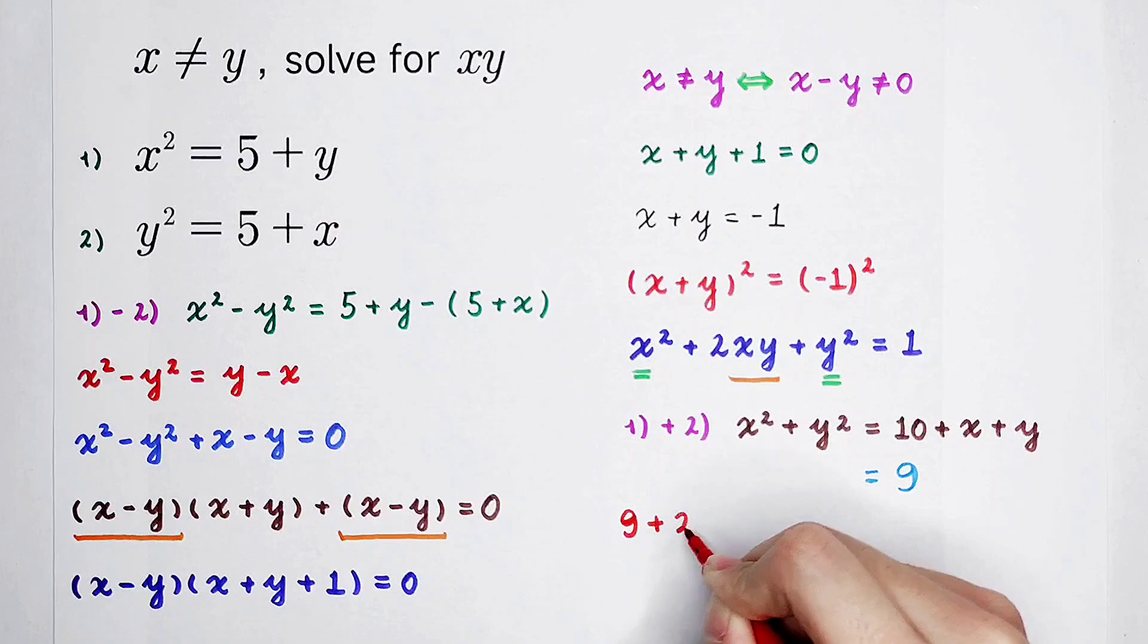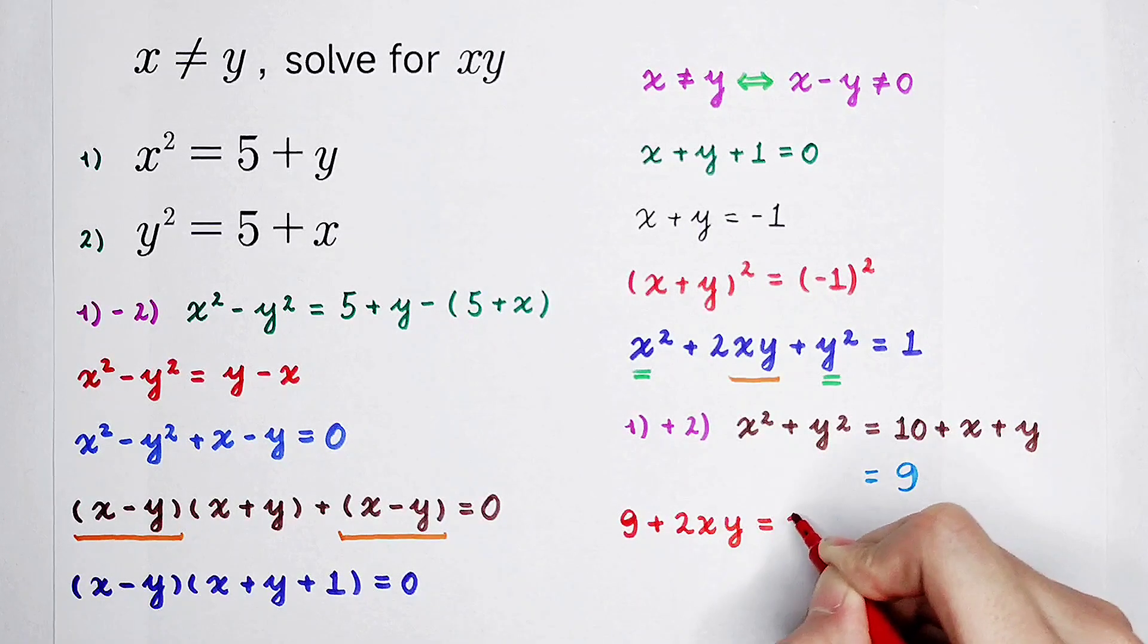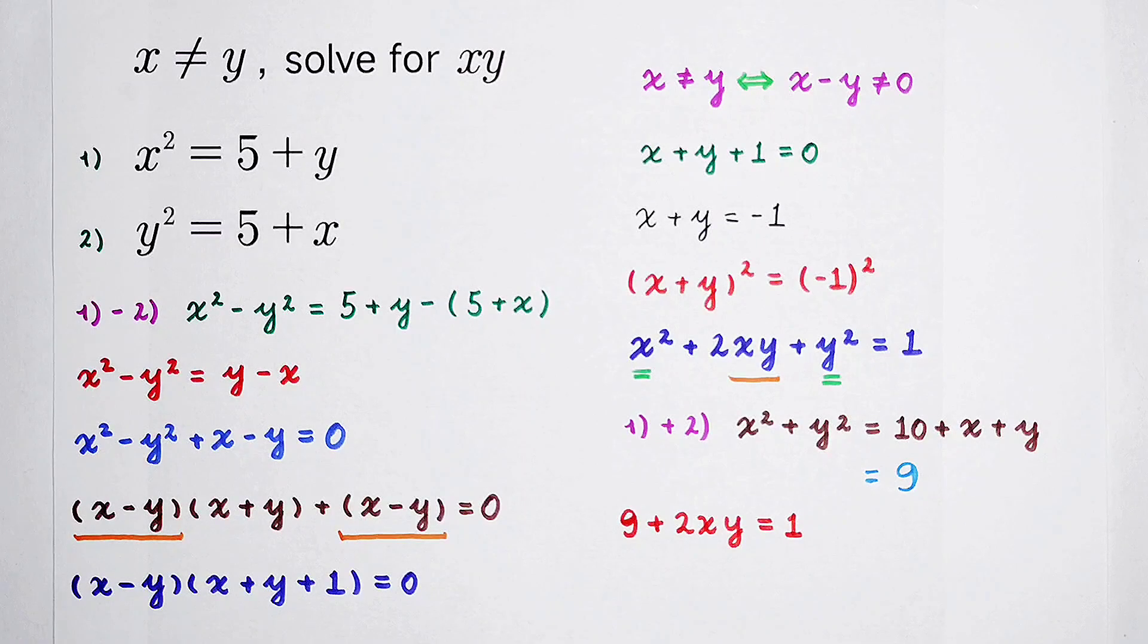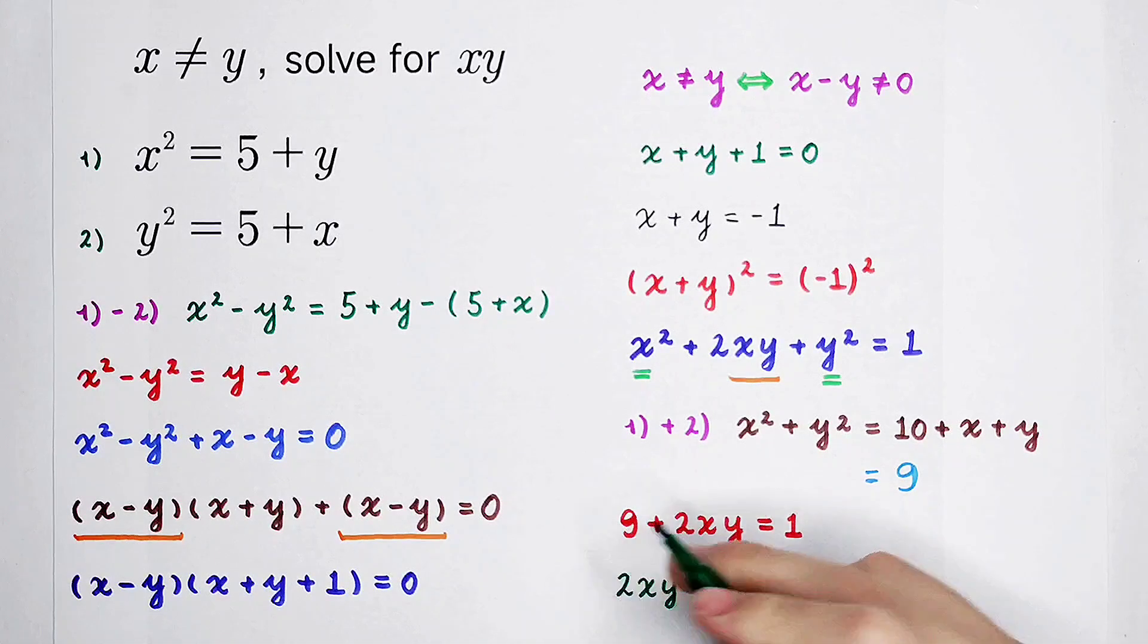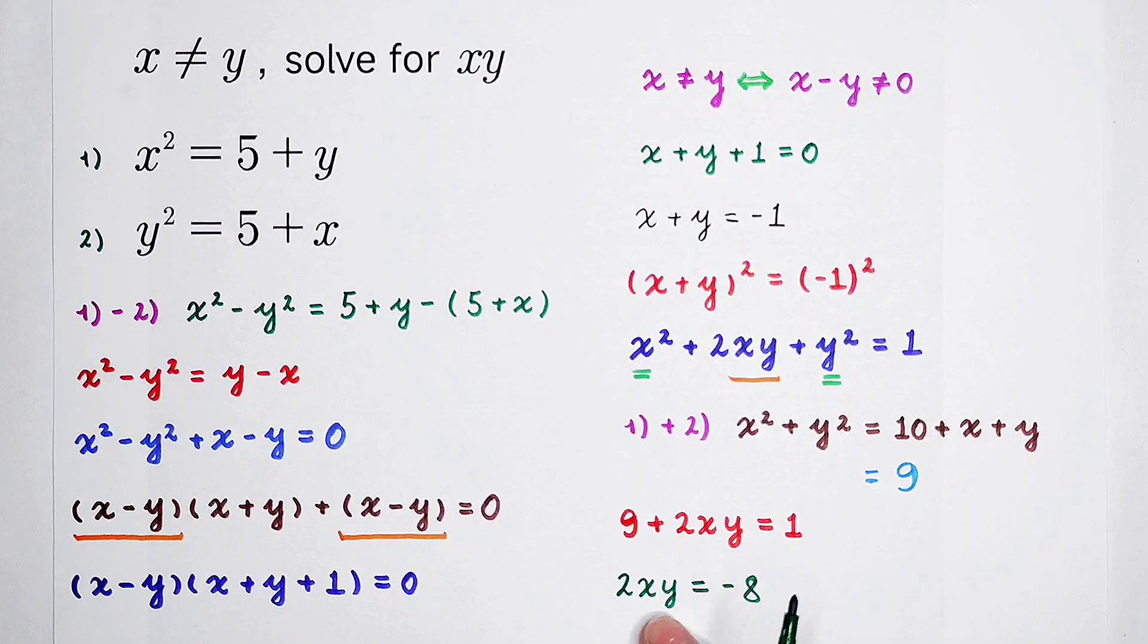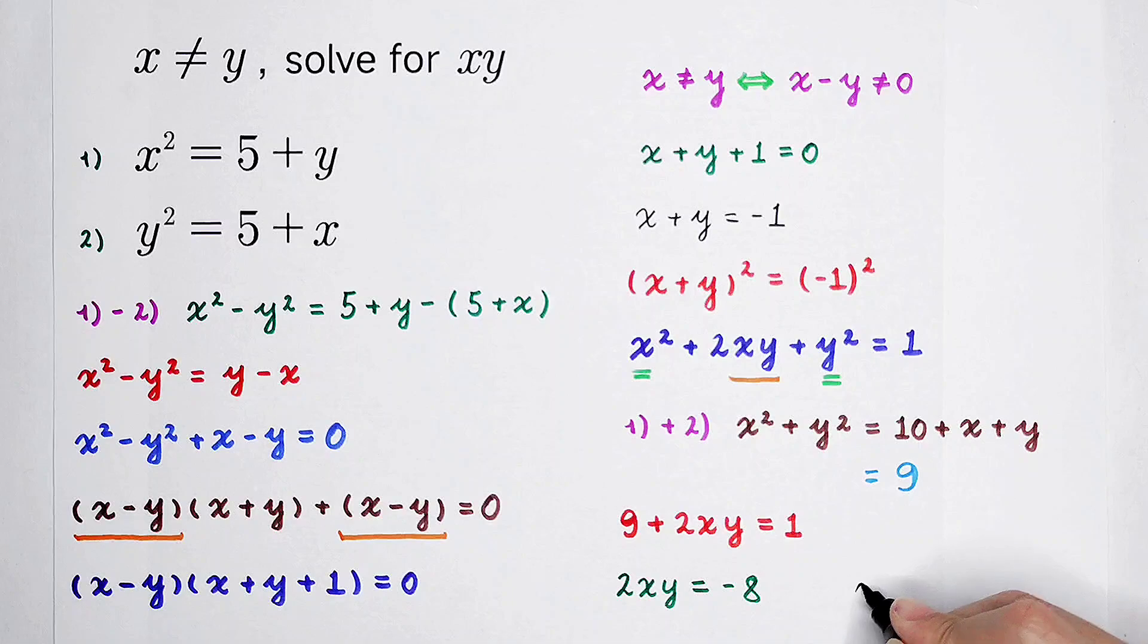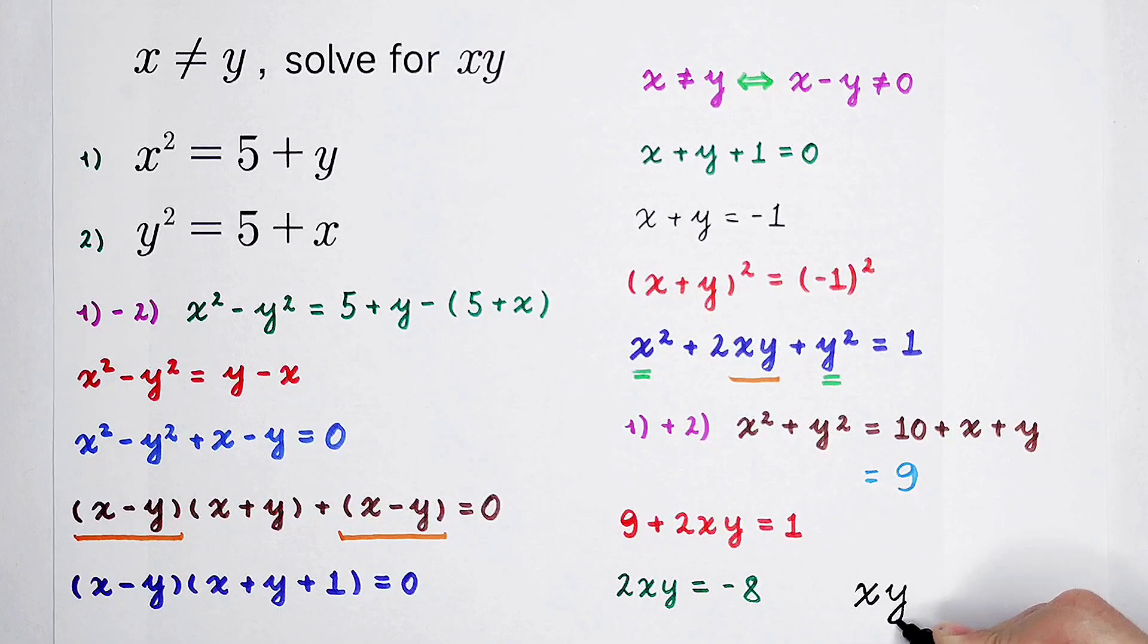9 plus 2xy is 1. And we can subtract 9 from both sides. You can get x times y. Oh, here is also 2. 2 times x times y equals 1 minus 9 is minus 8. So, the product of x and y, x times y, is negative 8 divided by 2. So, the answer is x times y is negative 4.